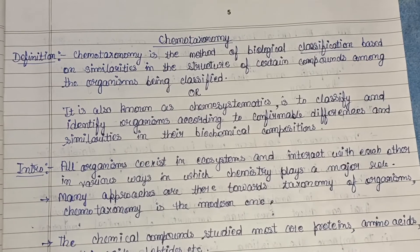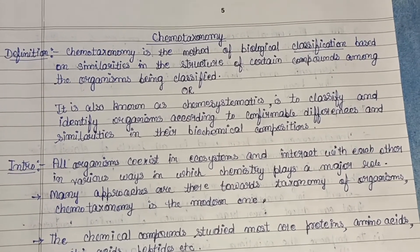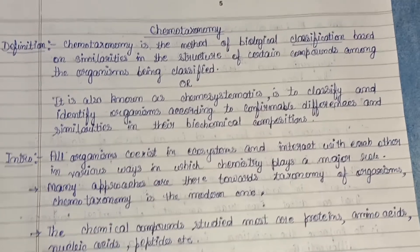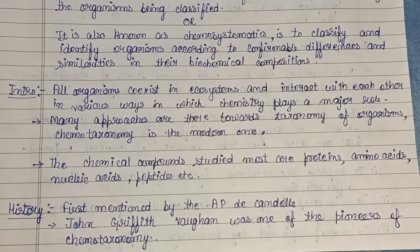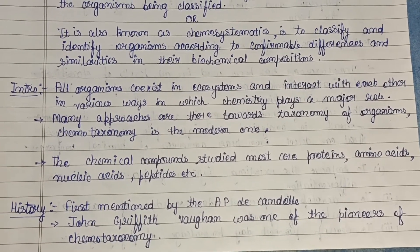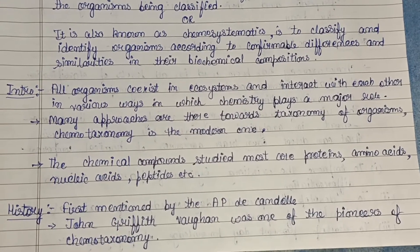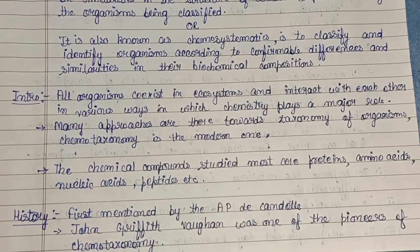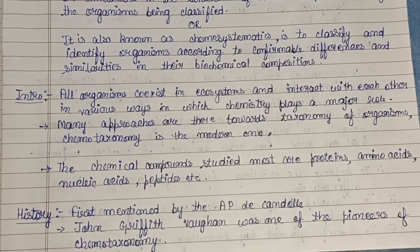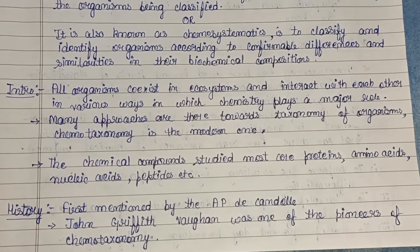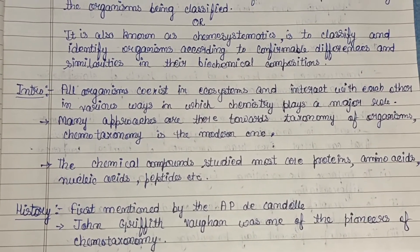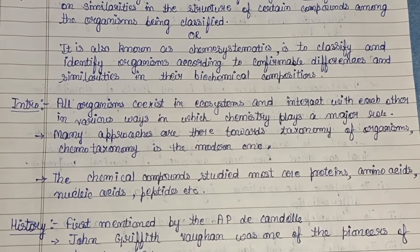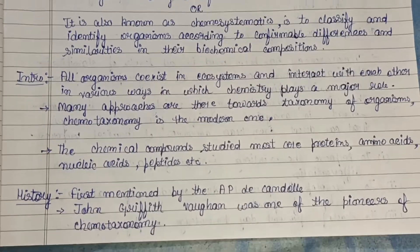Chemotaxonomy is a branch of taxonomy in which organisms are identified, classified, and described on the basis of the biochemical products or properties that they possess. All organisms coexist in the ecosystem and interact with each other in various ways, in which chemistry plays a very major role. Chemotaxonomy is the modern, recent approach. The chemical compounds studied most are proteins, amino acids, nucleic acids, and peptides present in living organisms.